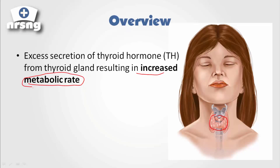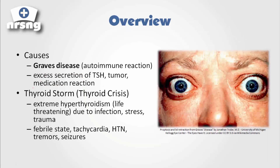As we understand that, we can start to understand the signs and symptoms and how we can treat it. Some of the causes are Graves disease, which is an autoimmune reaction, an excessive secretion of thyroid stimulating hormone, possibly a pituitary tumor, or a medication reaction. In a patient with hyperthyroidism, what can happen is they can develop a thyroid storm — a thyroid crisis. It's incredibly extreme hyperthyroidism and it's very life-threatening. Things that can cause this include infection, stress, or trauma.